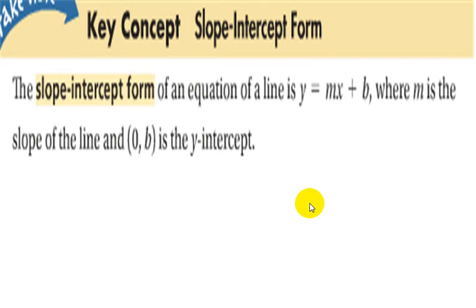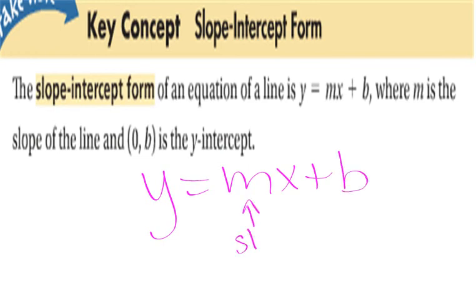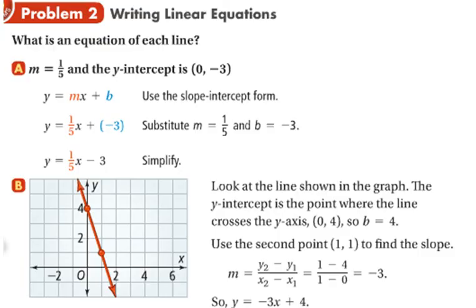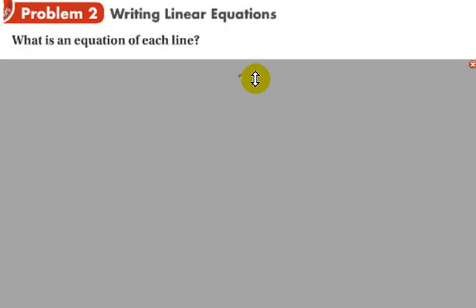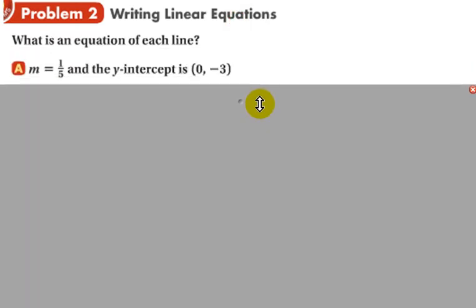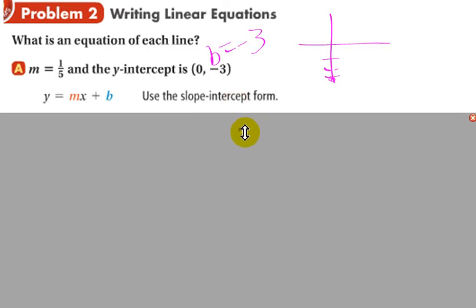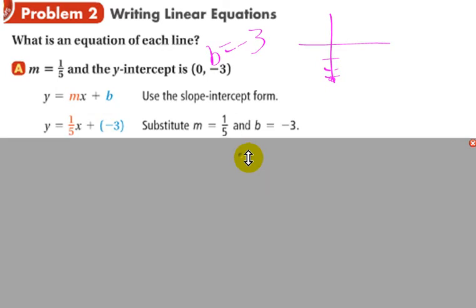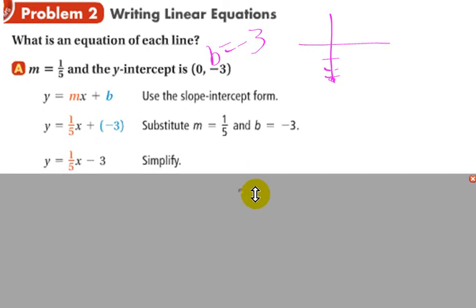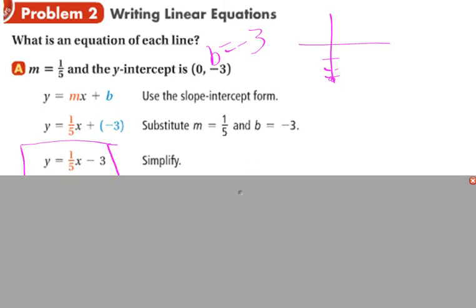So, now we're into the slope intercept form, which I talked about a minute ago. So, y equals mx plus b, where m is our slope and b is our y intercept. If they ask us what's the equation of each line and they give us m is 1 fifth and the y intercept is 0, negative 3. Well, when you think about the y intercept being 0, negative 3, well, that's just a y intercept of negative 3. That's your b value. So, you're going to use your slope intercept form, y equals mx plus b. And substitute 1 fifth for m and negative 3 for b. And then clean up your signs. And you have y equals 1 fifth x minus 3.